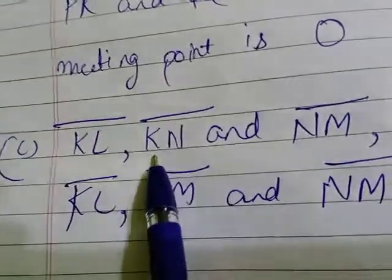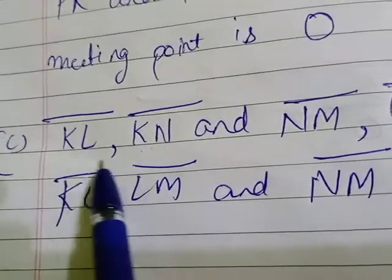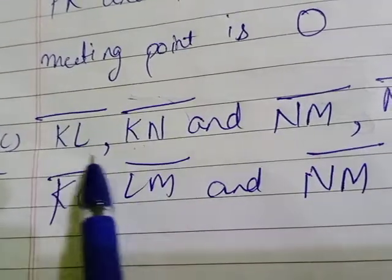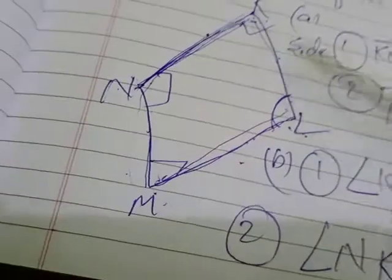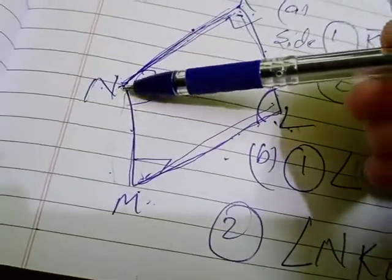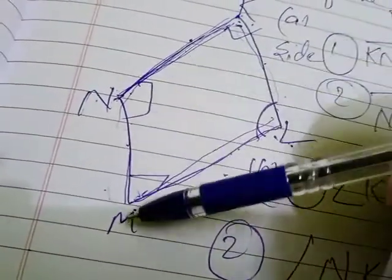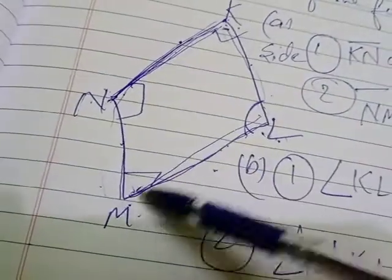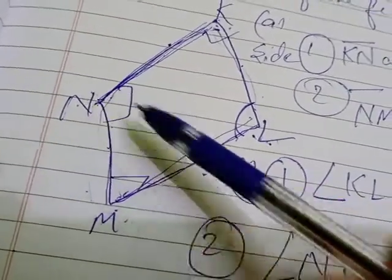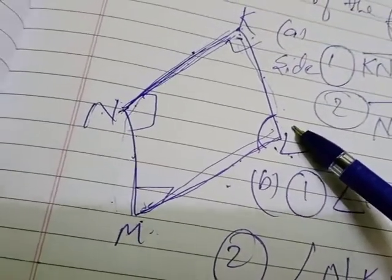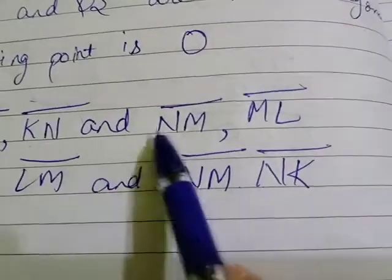You can see here KL KN, these both are adjacent sides, got it? Then NM is attached with ML, right? MN attached with ML, that is also the adjacent side NM ML, okay.